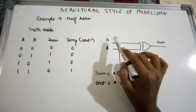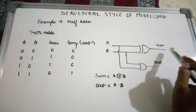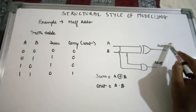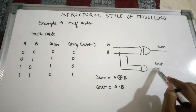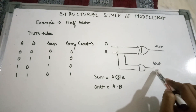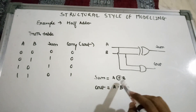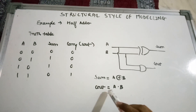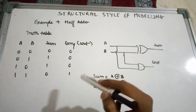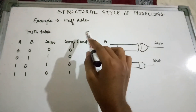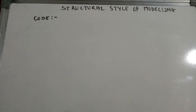By seeing the truth table we can design the circuit: A XOR B gives us the sum, and A AND B gives us the carry. So the equations are: sum = A XOR B, and carry = A AND B. We will now write this half adder using structural style of modeling.